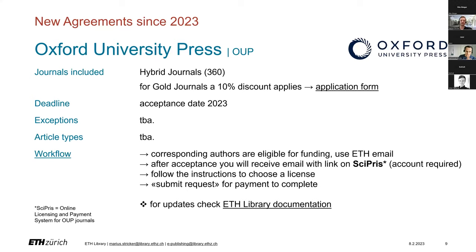Through the agreement with Oxford University Press, there are 360 hybrid journals included, and for gold journals we get a 10% discount on the APC. OUP prompts you to create an additional account on Cypress to complete the publishing process. Cypress deals with copyright issues related to your publication. Without completing the process on Cypress, it's likely you will receive an unexpected APC invoice. When this happens, please don't pay, but forward the invoice to us because OUP does not reimburse already paid invoices. We still have some problems with the OUP workflow, so if anything goes wrong, please contact us.